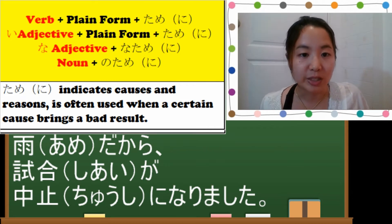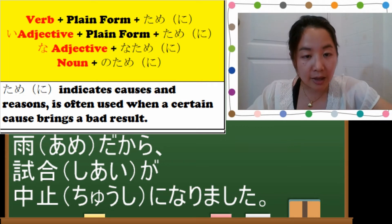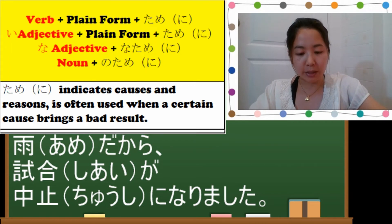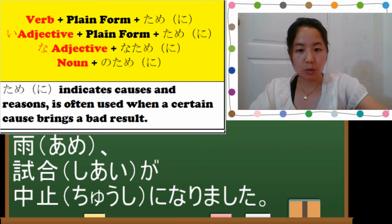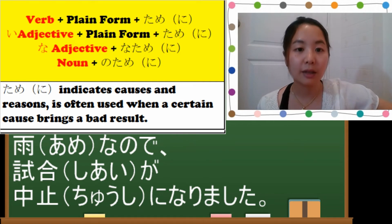We have learned another one which is node. So the difference between kara and node is node is more polite and it sounds softer. If you want to use node you put na node. After noun and na-adjective it becomes na node. Ame na node shiai ga chuushi ni narimashita.